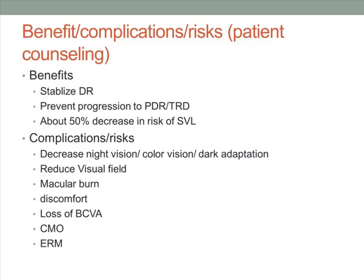Next, we talk about the benefits, complications, and risks, which is important when you counsel the patient for PRP. The benefit of the procedure is to stabilize diabetic retinopathy — you tell the patient it is able to prevent progression to PDR or tractional retinal detachment, with about a 50% decrease in the risk of severe visual loss. There are some risks associated with the procedure, such as decreased night vision, color vision, or dark adaptation.